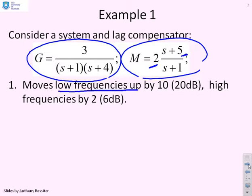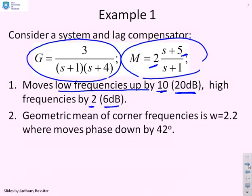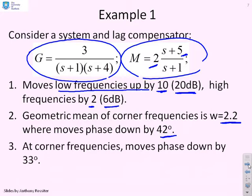With K = 2 and beta = 5, we move low frequencies up by a factor of 10, or 20 decibels, and high frequencies up by a factor of 2, or 6 decibels. The geometric mean of the corner frequencies, which are 1 and 5, is 2.2 — that's where we get the maximum phase dip of 42 degrees. At the corner frequencies themselves, the phase moves down by 33 degrees.